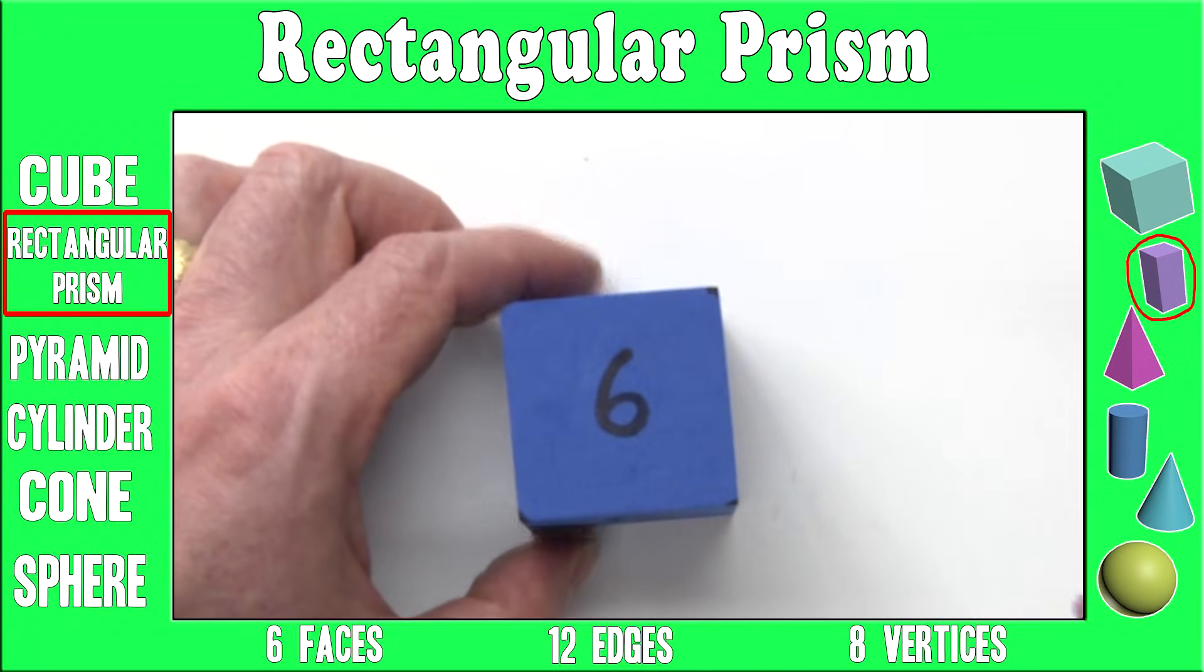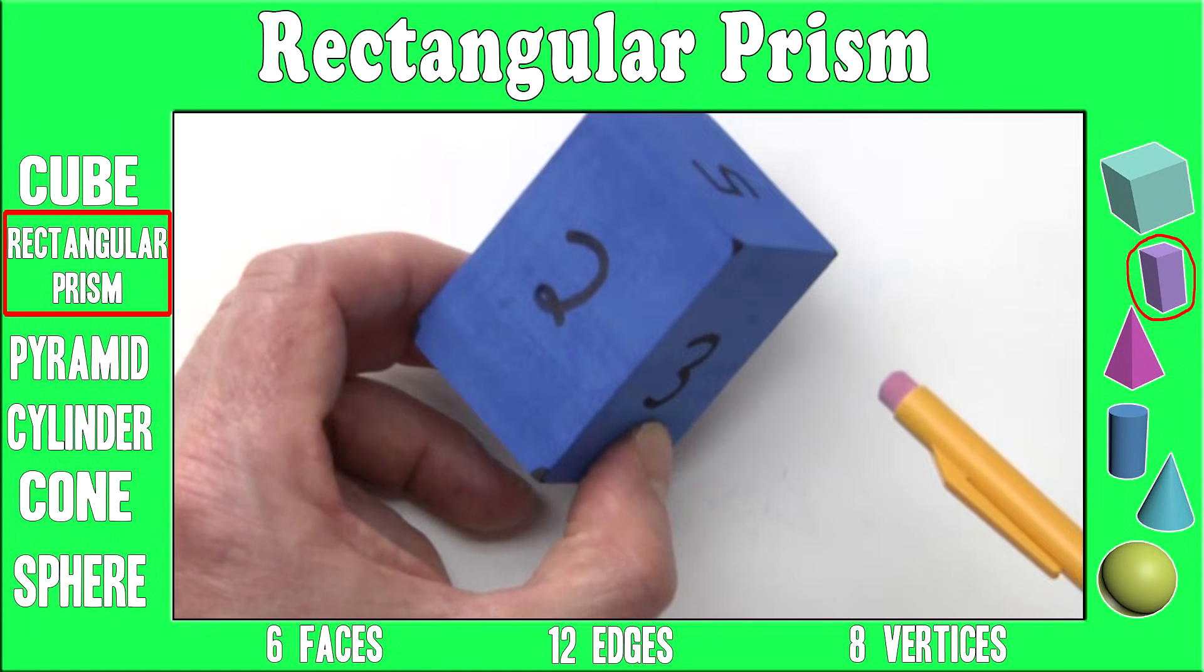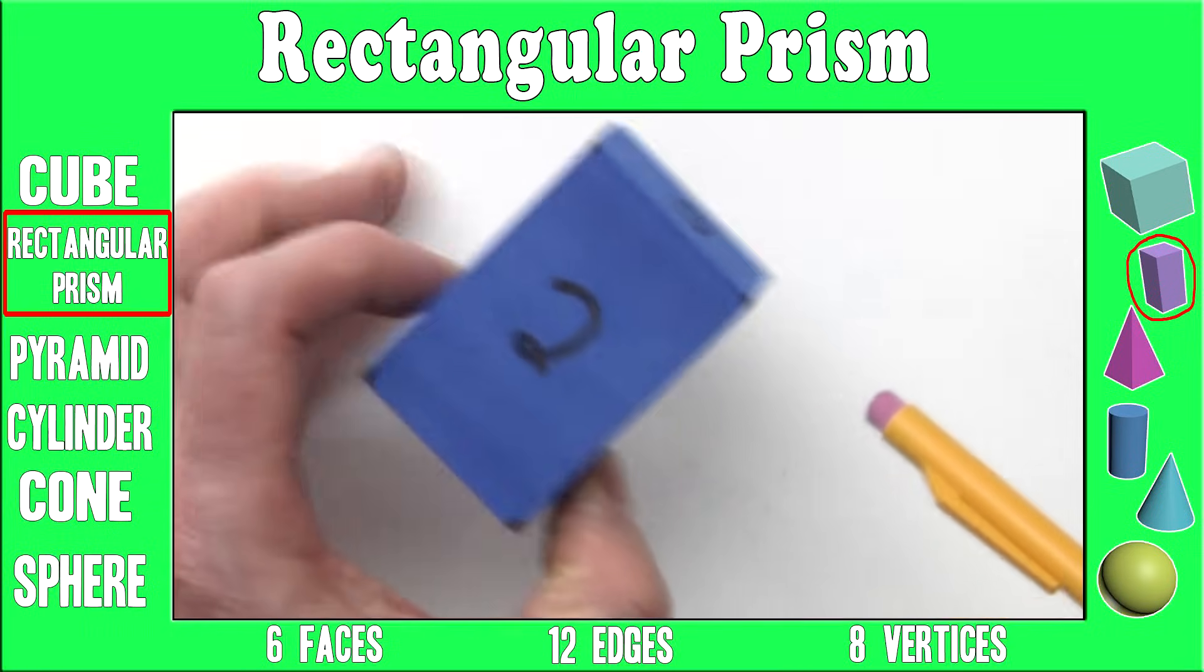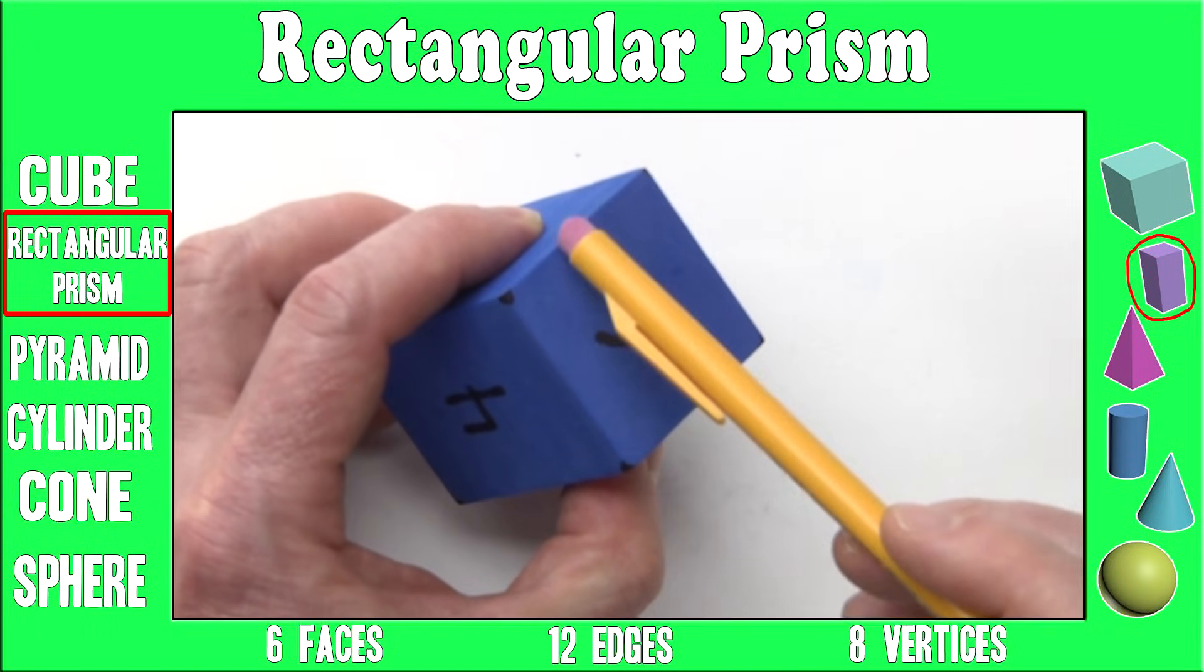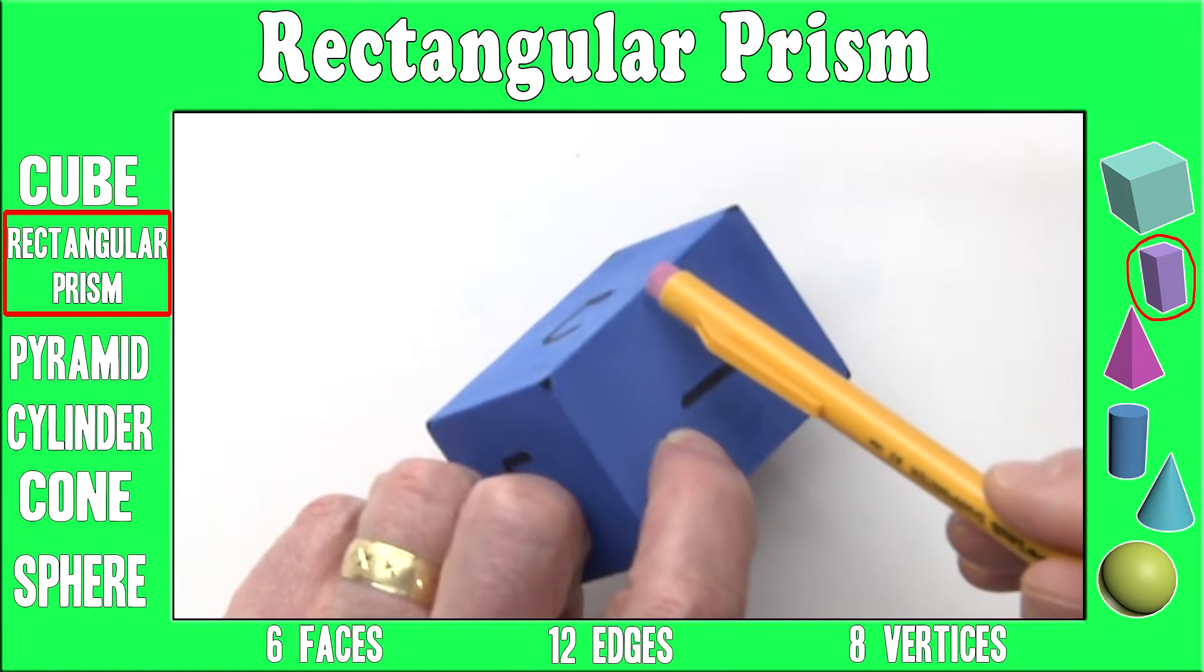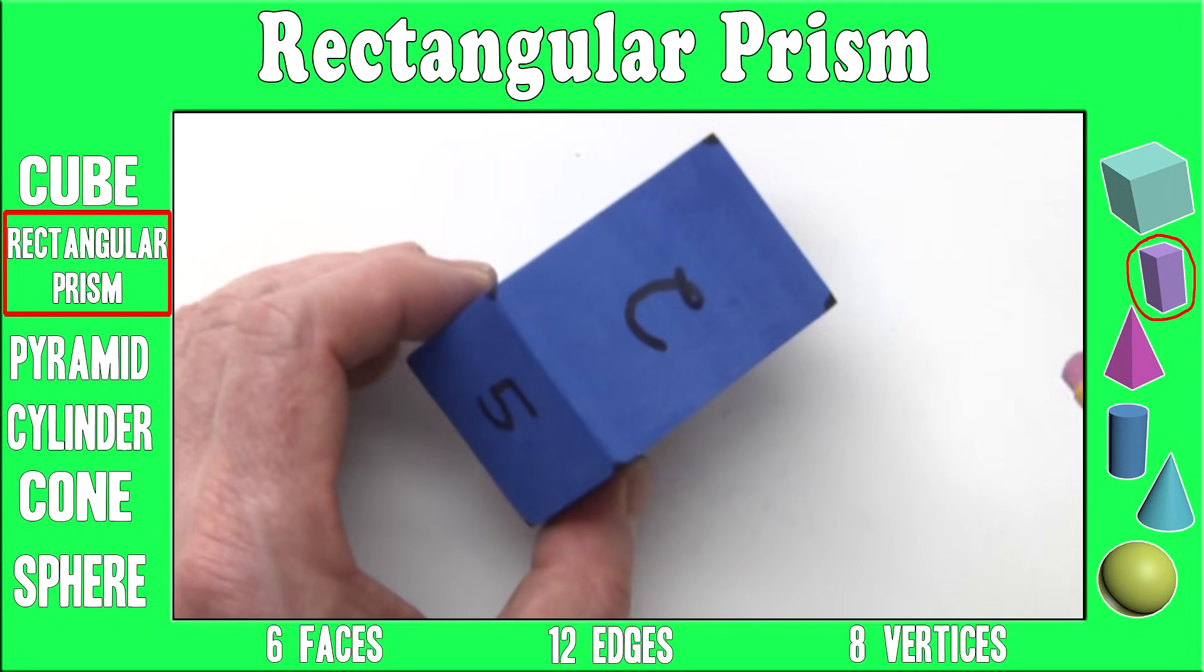A rectangular prism has 12 edges. One, two, three, four, five, six, seven, eight, nine, ten, eleven, twelve.